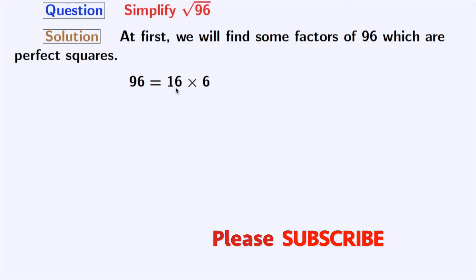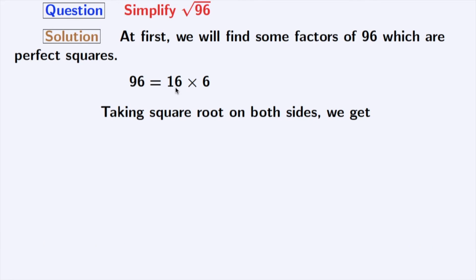Now, we will take square root on both sides. Doing that, we get square root of 96 is equal to square root of 16 times 6.